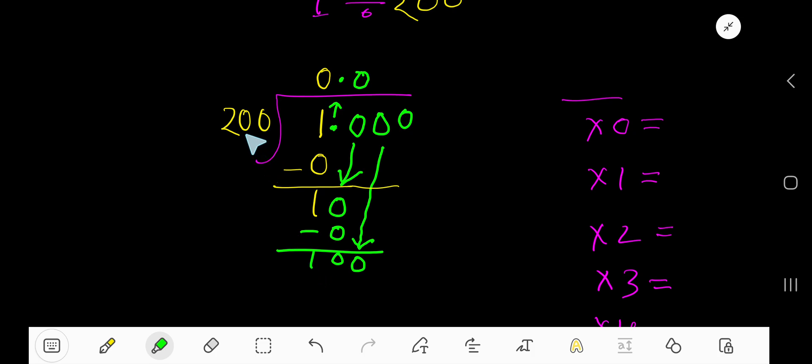Which is less than 200. 200 goes into 100 how many times? 0 times. 0 times 200 is 0, right? If you subtract, then you are getting 0, 0, 1.